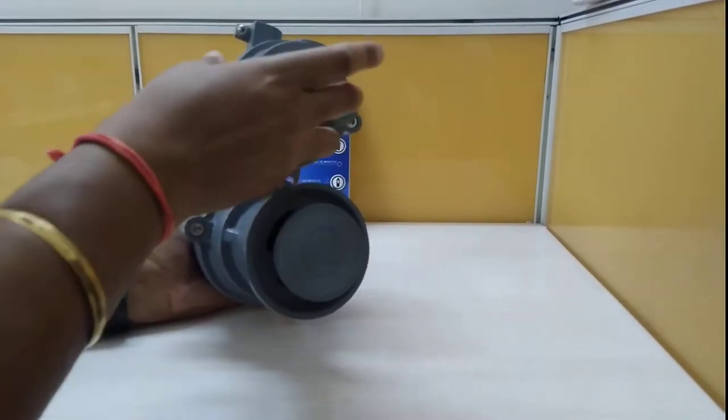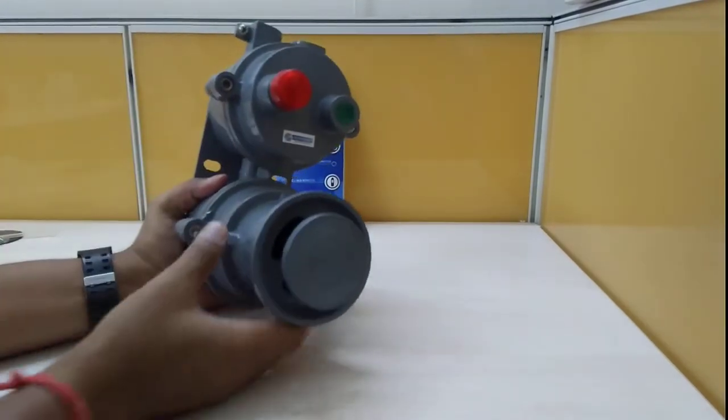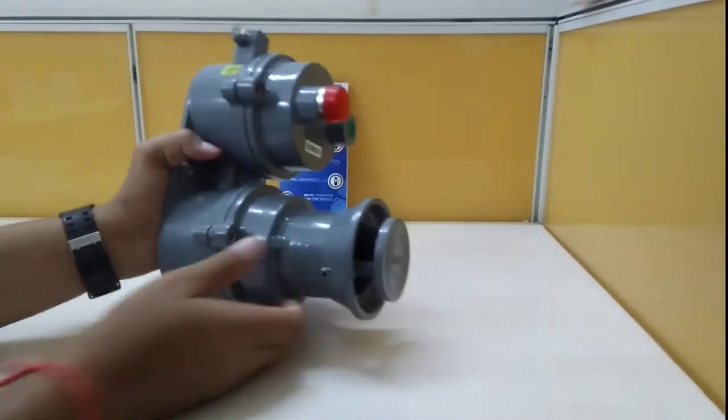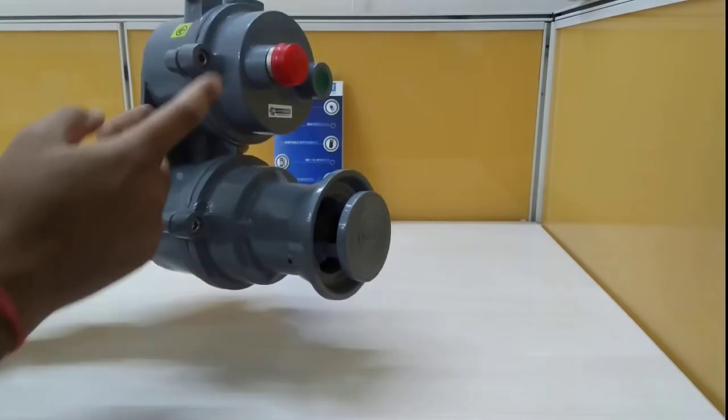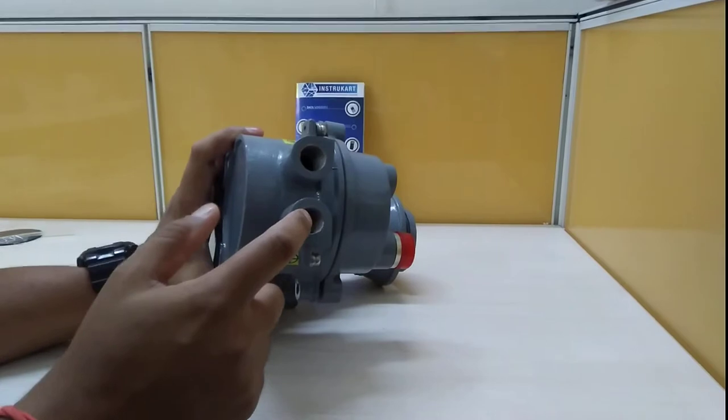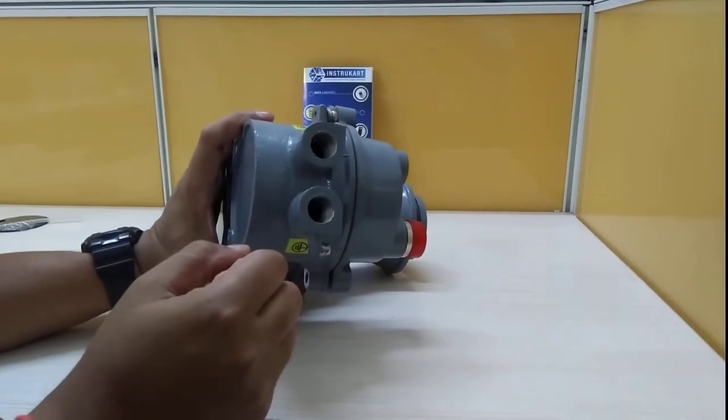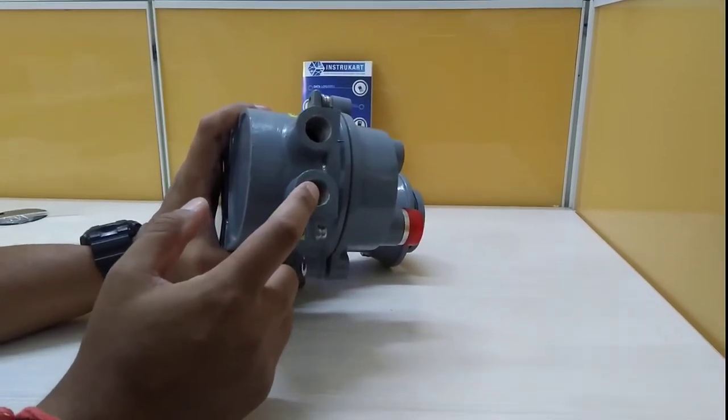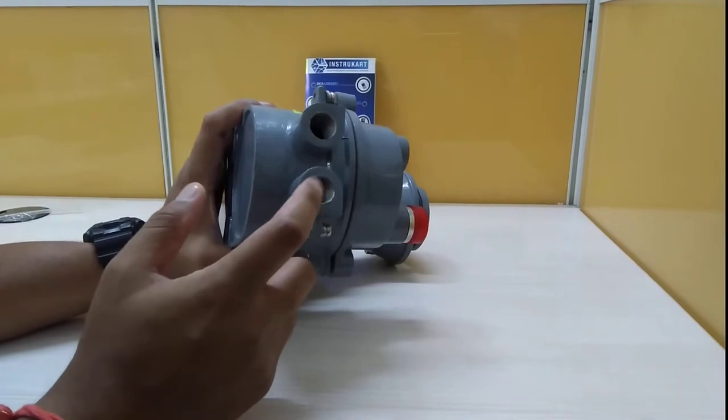We have two openings on the device here. We also have two inlets for the wires to come in. For this kind of hooter, we generally use armored cable which are specially used in these kinds of zones.